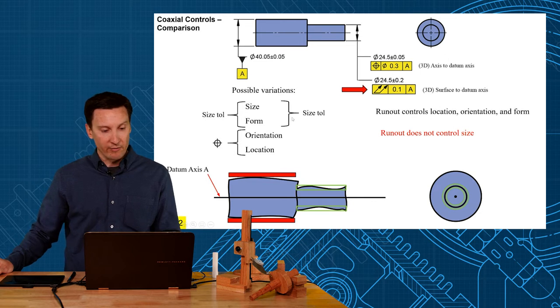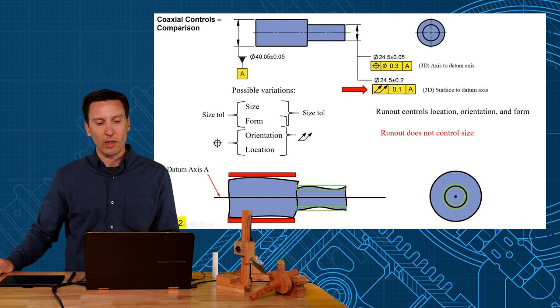Now run-out, you're still going to have a size tolerance on there, so that'll control size and form, but run-out slightly overlaps. Total run-out will also control the form.